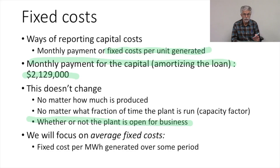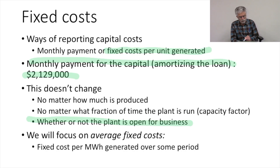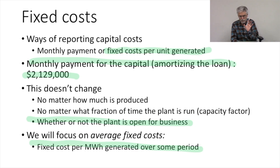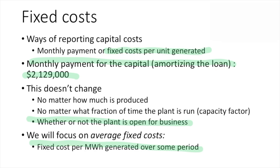We're going to spend a lot of time focusing on this other way of reporting fixed costs, and that is the average fixed cost, or the fixed cost per unit per megawatt hour of electricity generated. What is the fixed cost per month? How much electricity are we generating that month? We divide the fixed payment we make by the number of megawatt hours we generate, and that gives us our average fixed costs.